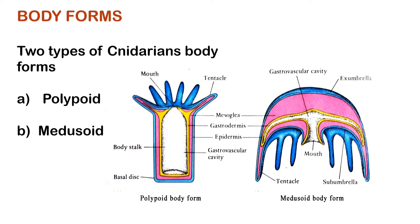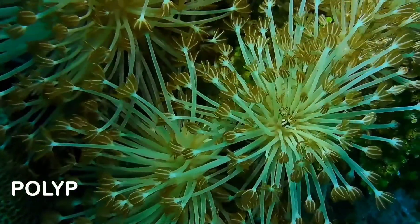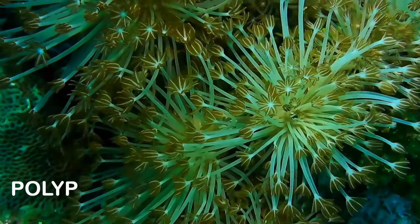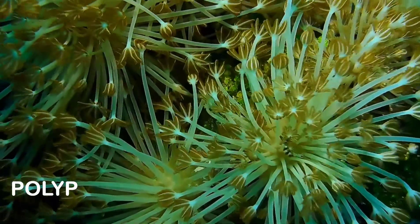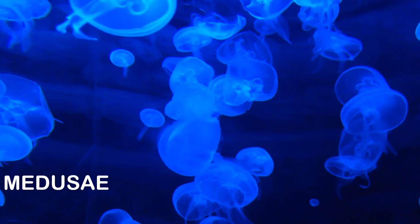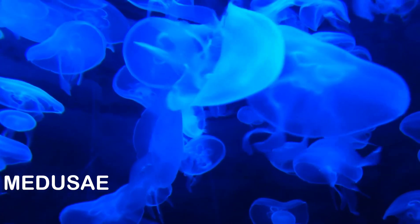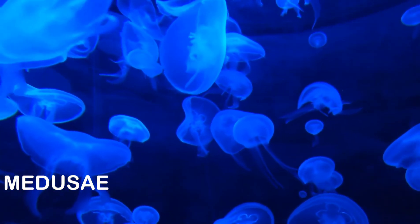There are basically two types of Cnidarian body forms: polypoid and medusoid. Polypoid cnidarians have a cylindrical body with the oral end bearing the mouth and tentacles directed upwards, and the aboral end attached to the substratum. Polypoid forms include hydras and corals. Medusoid cnidarians have bell or saucer-shaped bodies with the aboral end convex and directed upward while the oral end is concave and directed downward. The medusae are usually free-swimming, as you can observe in this video.